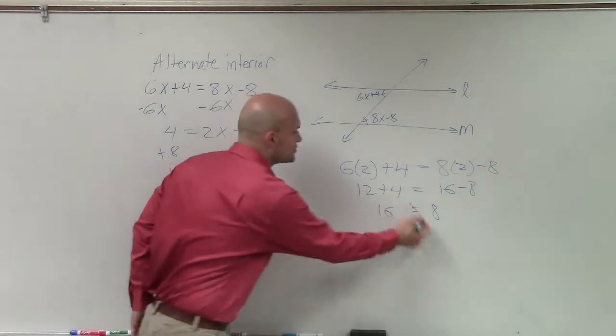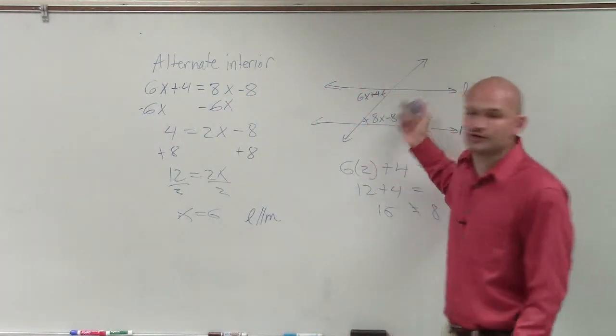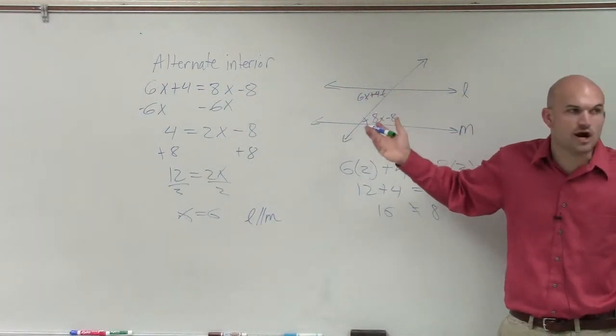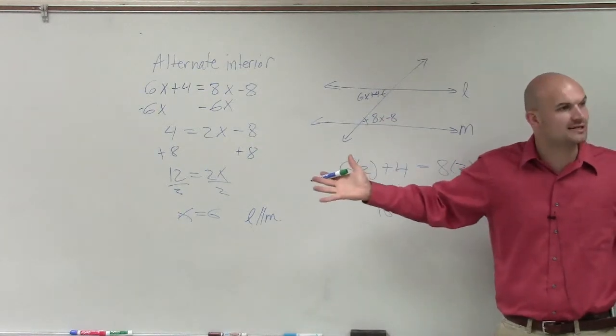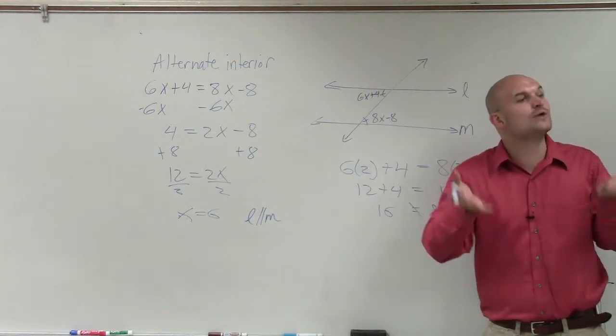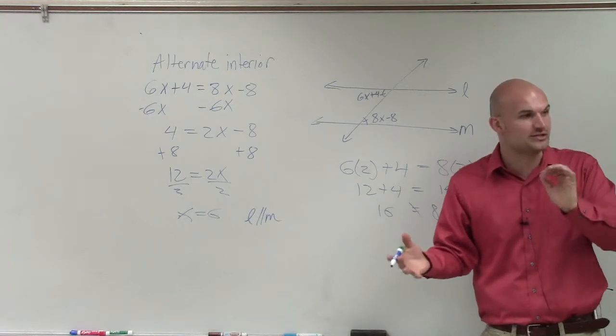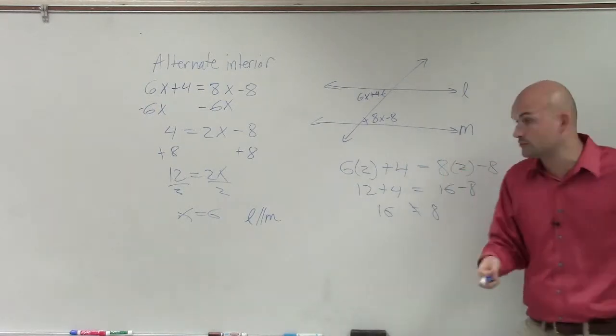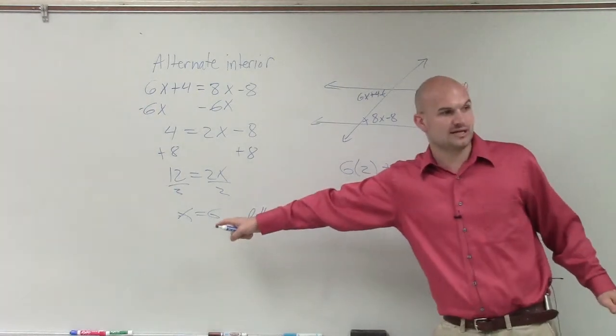No. So therefore, when x equals 2, are your alternate interior angles equal in measure? No. So therefore, you don't have parallel lines. You only have parallel lines when you have alternate interior angles that are equal in measure. Does that make sense? And the only time we have them equal in measure is when x is equal to 6.